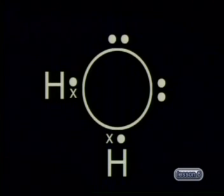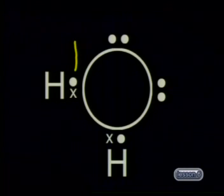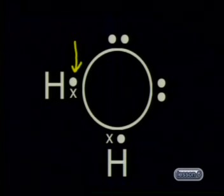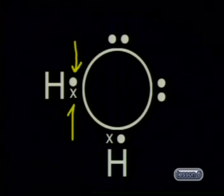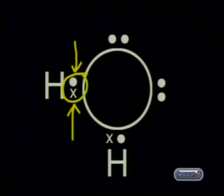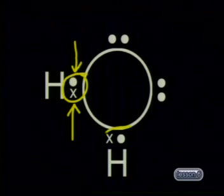There are two very important facts to take note of here. Firstly, notice that an electron from the oxygen atom, shown as a dot, and an electron from the hydrogen atom, shown as a cross, are shared in order to form a single covalent bond. So in this molecule, there are two single covalent bonds.